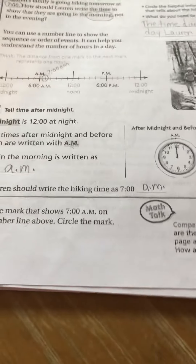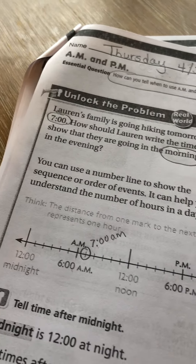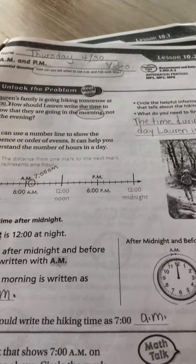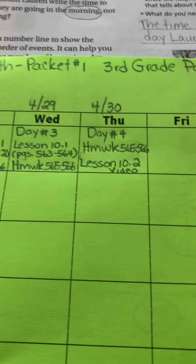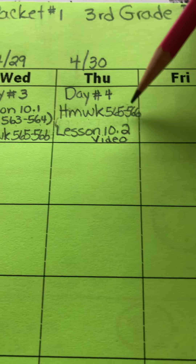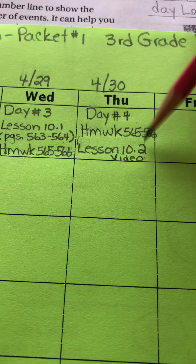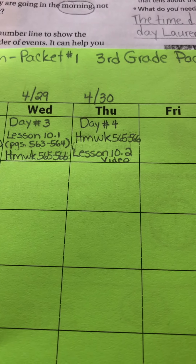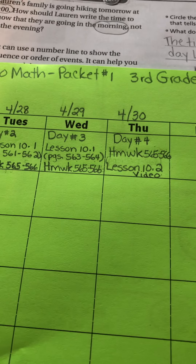All right boys and girls, I'm going to stop there. I basically did all of the sheet. I'll talk about the bottom part tomorrow. Here's my calendar: today is Thursday, April 30th, day 4. I went over the homework, pages 565 and 566. Then I showed you a video today. After that I did the first page of Lesson 10.2. Tomorrow I will do another couple pages for Lesson 10.2. Hope you got everything down, hope you understood it. You should have paused the video when you needed to. I will see you guys tomorrow. Bye.